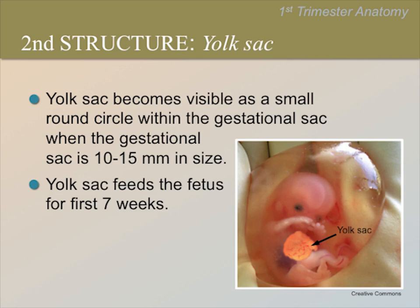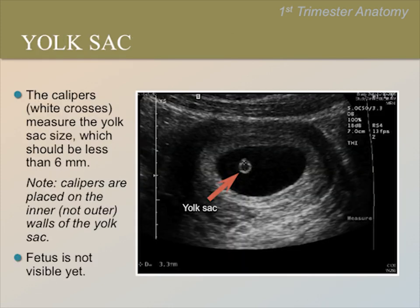The next normal structure that will appear in the first trimester pregnancy is the yolk sac. The yolk sac appears as a small round circle within the gestational sac when the sac is about 10 to 15 millimeters in size. The yolk sac feeds the fetus for the first seven weeks. You can see the yolk sac before you can see the fetus. Here you can see a gestational sac with a yolk sac. The fetus is not visible yet because this is a very early pregnancy. The yolk sac should be less than 6 millimeters in a normal pregnancy. When measuring the yolk sac, the calipers are placed on the inner walls of the yolk sac, not the outer walls.